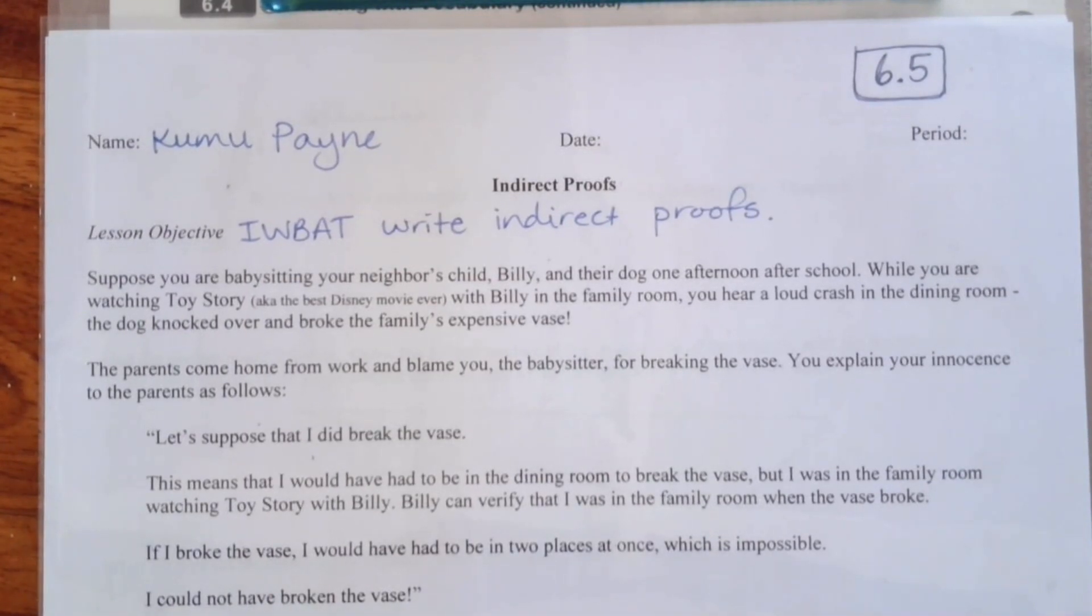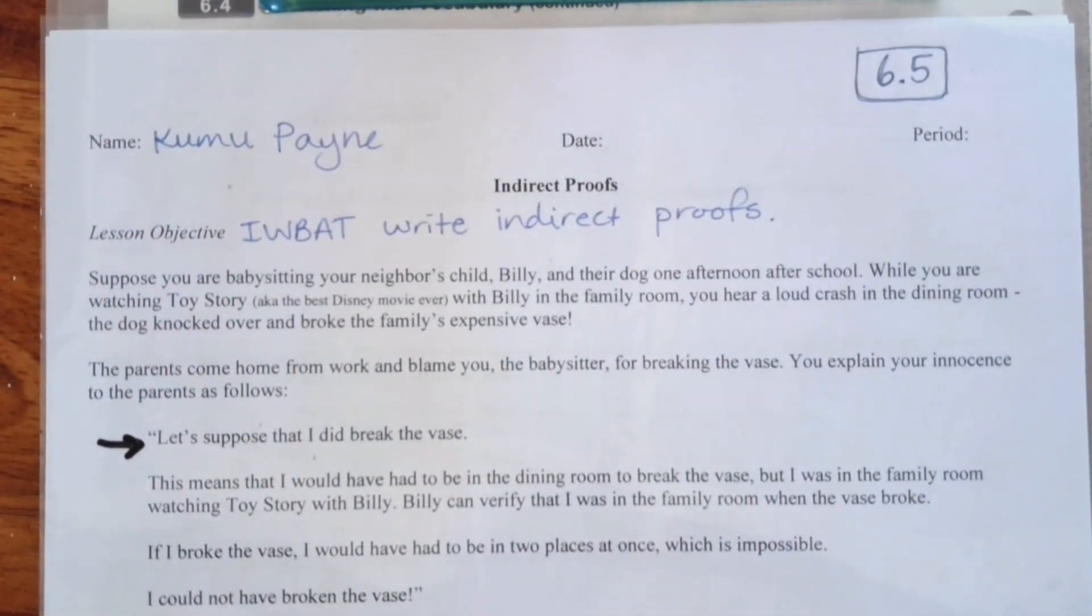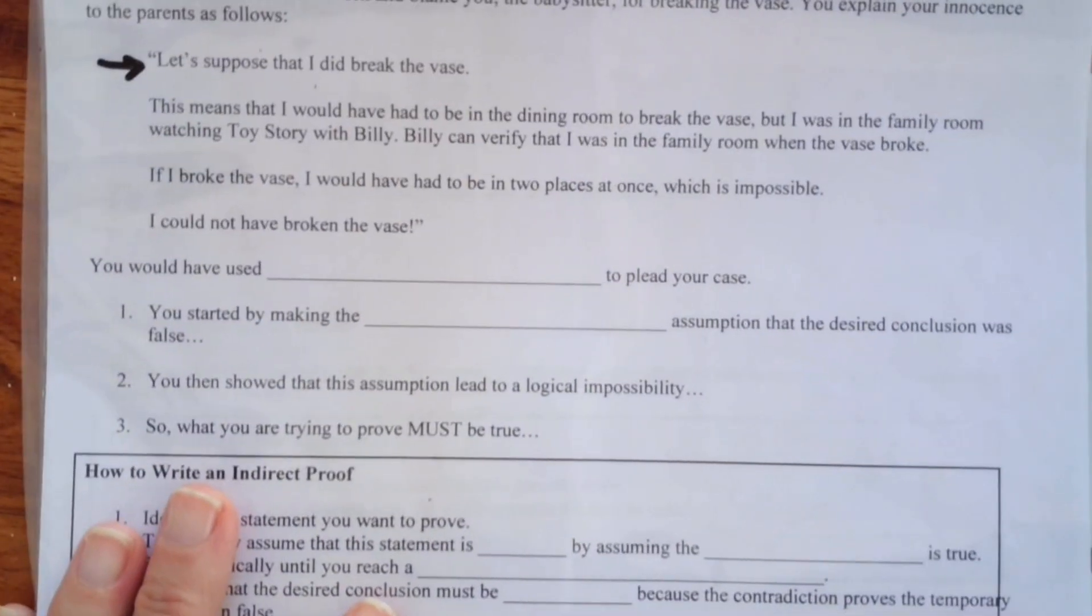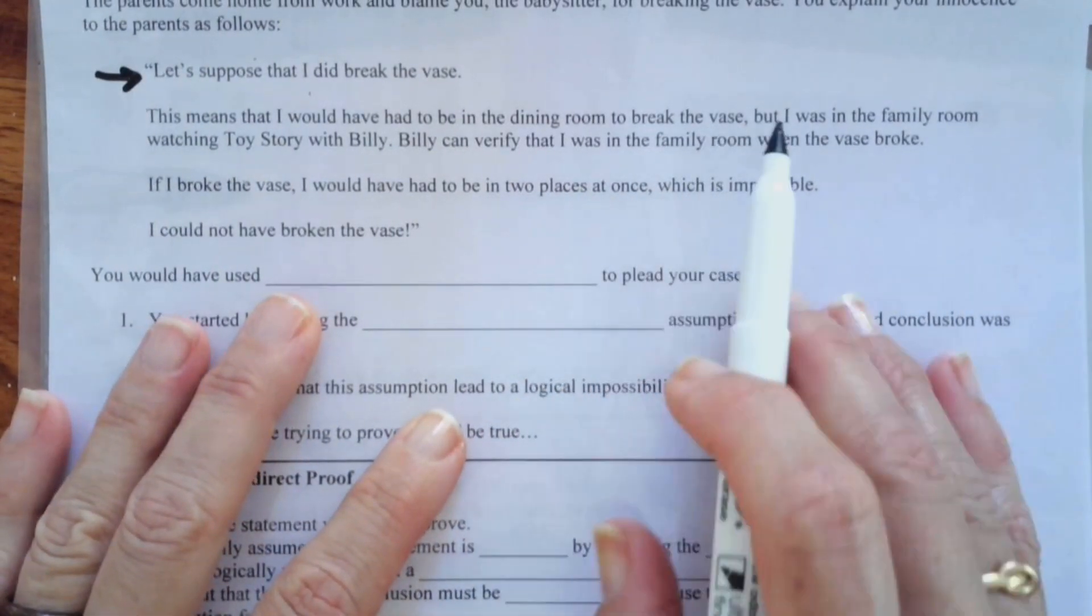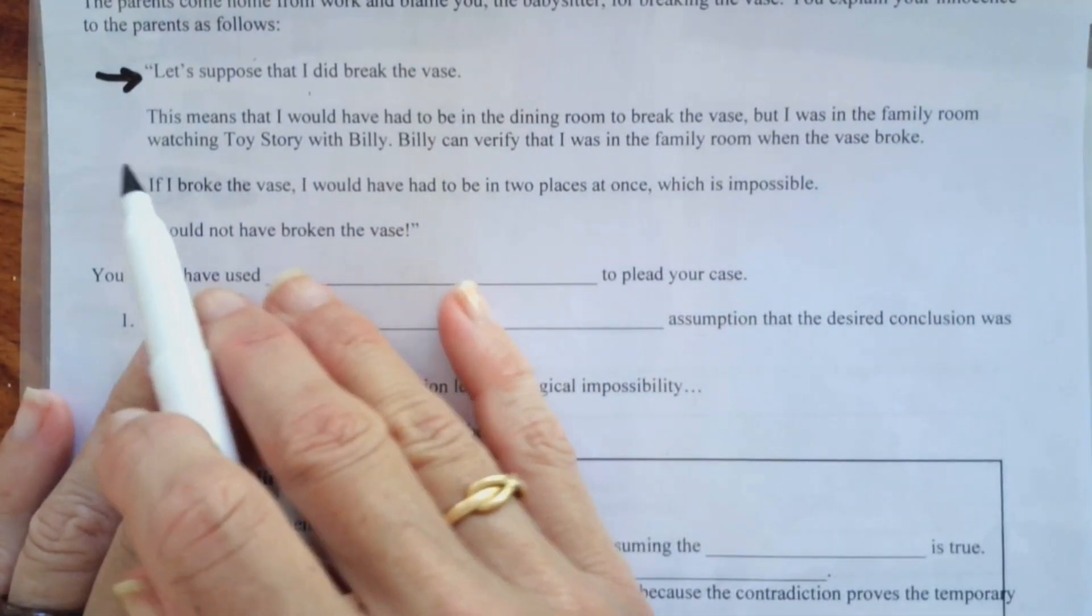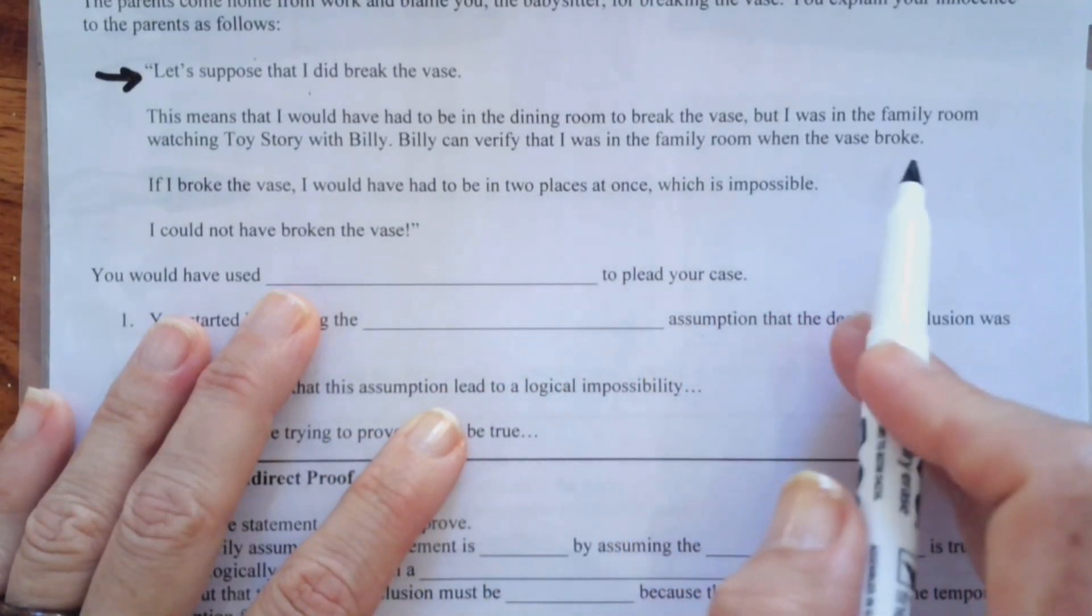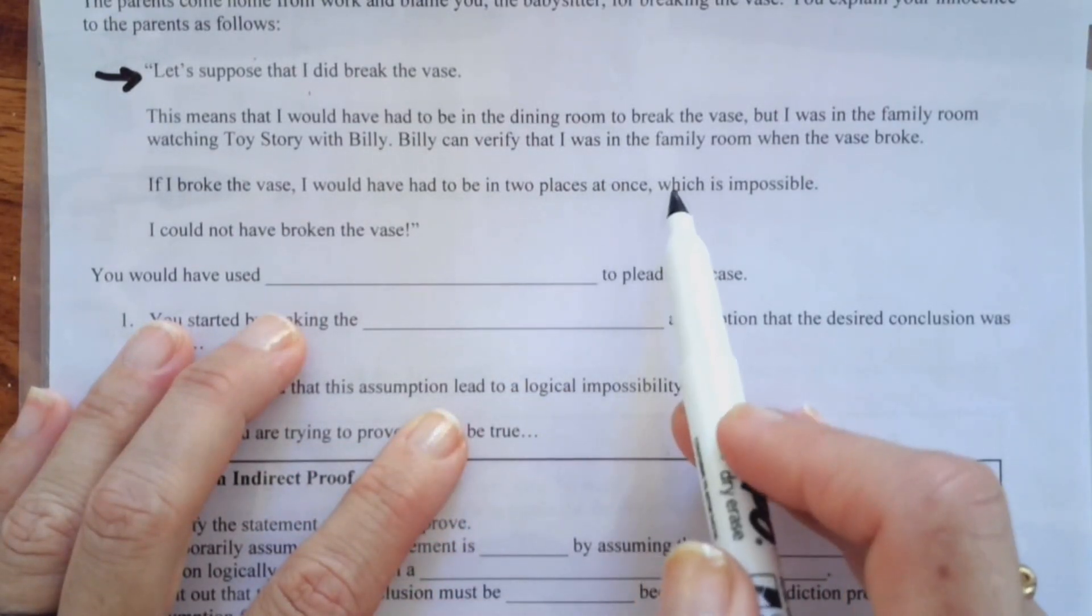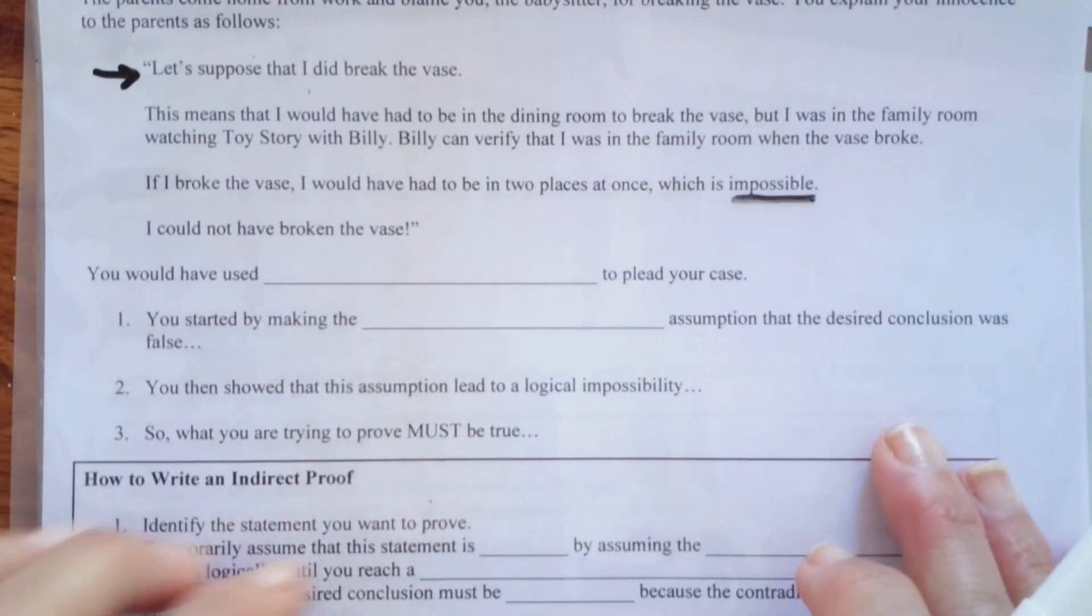You explain your innocence to the parents as follows. Let's suppose I did break the vase. And that means I would have had to be in the dining room to break the vase. But I was in the family room watching Toy Story with Billy. Billy can verify that I was in the family room when the vase broke. If I broke the vase, I would have had to be in two places at once, which is impossible. I could not have broken the vase.